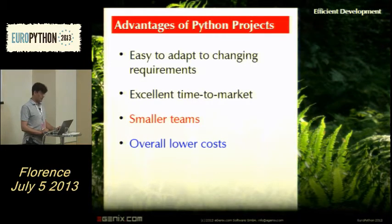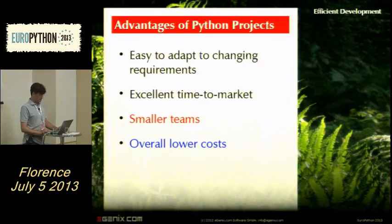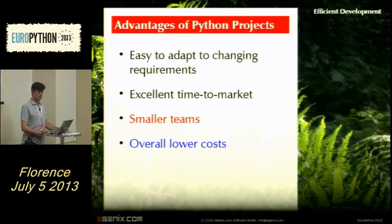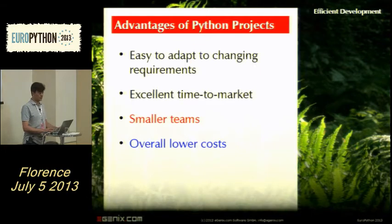The advantages of doing Python projects: first, you skip the re-implementation phase in Java or C++, giving you a very lean project setup. You can easily adapt to changes and integrate new features. It has excellent time to market — you can develop very quickly and work with smaller teams than in Java or C++ projects. Overall, and this is what customers like, the costs are much lower because you pay for fewer developers. It's a complete win situation for the customer.